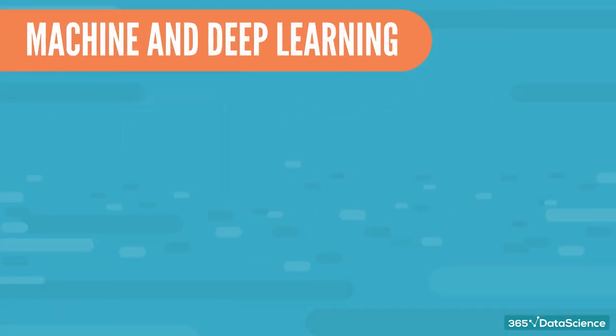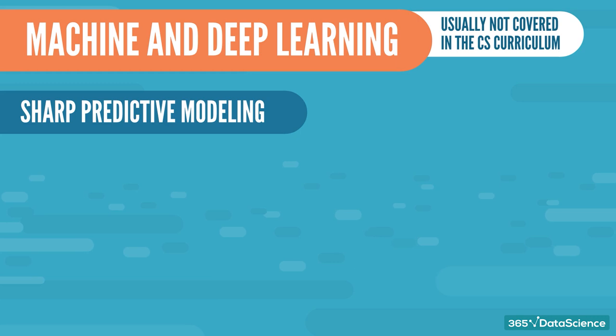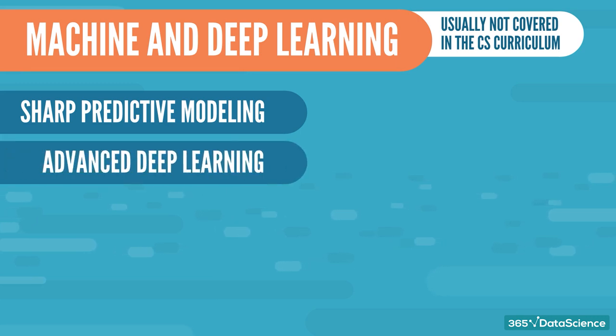Machine and Deep Learning. You guessed right. Usually, these aren't covered in the CS curriculum. But it is namely sharp predictive modeling skills and advanced deep learning techniques that will give you a huge competitive edge.